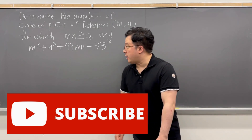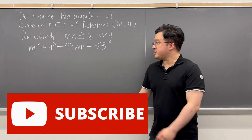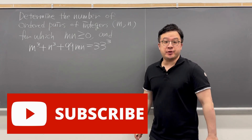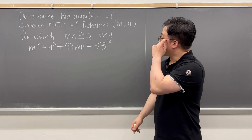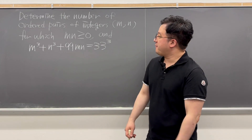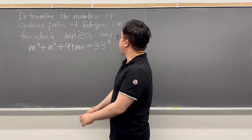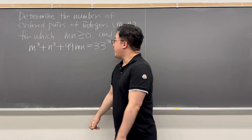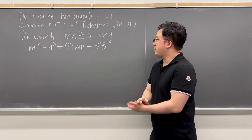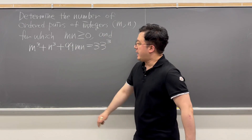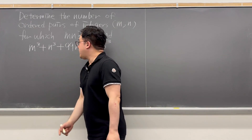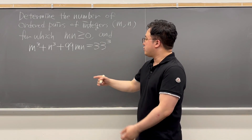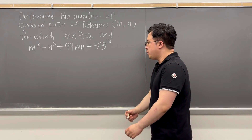Welcome back. PK here. I'm looking at this interesting algebra question from the International Math Olympiad. The question is: determine the number of ordered pairs of integers m and n, for which m times n is greater than or equal to 0, and m cubed plus n cubed plus 99mn is equal to 33 cubed.